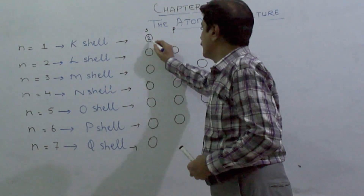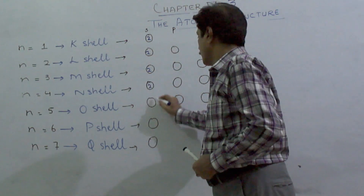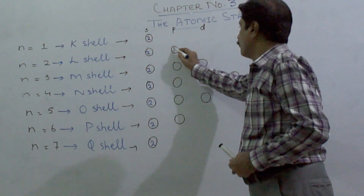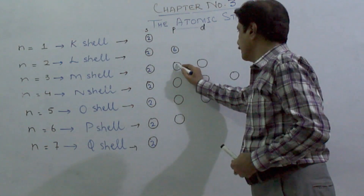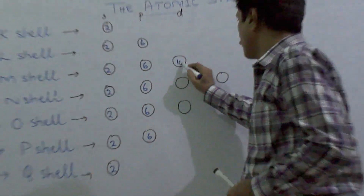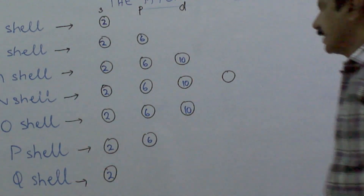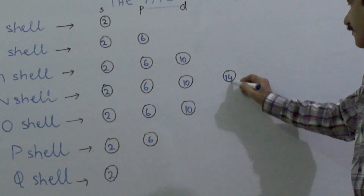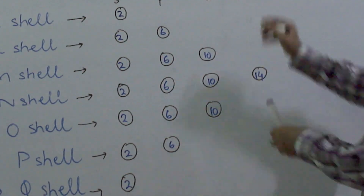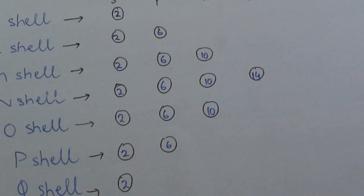As you all know, the S orbital has only two electrons in it, the P orbital contains six electrons, the D orbital contains 10 electrons, and the F orbital contains 14 electrons.